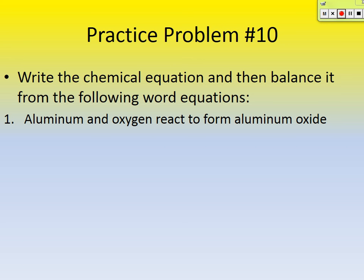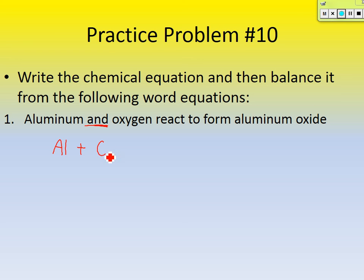Let's go to a practice problem. Here's a word equation: aluminum and oxygen react to form aluminum oxide. We need to come up with the skeleton equation — the formulas that make an equation. Aluminum's symbol is Al. Is it diatomic? It's not, so I can leave it as Al, plus a plus sign for 'and.' Oxygen's symbol is O. Is it diatomic and by itself? Yes — so I put a little 2 right there: O2.